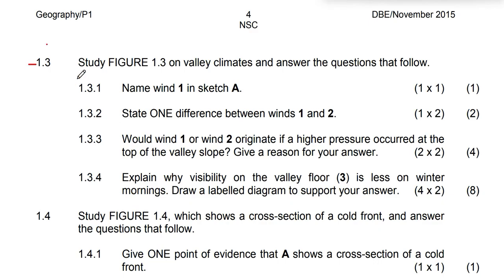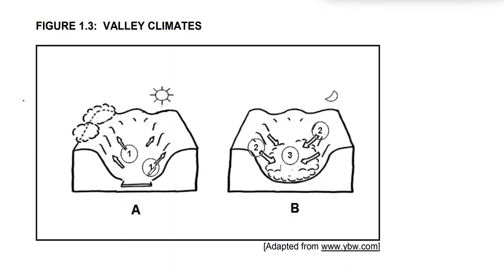Let's come to the very first question, Question 1.3.1: Name Wind 1 in sketch A. So we have to name Wind 1. As I mentioned, we're going to talk about anabatic winds as well as katabatic winds. You can see these are up-slope winds, and they occur during the day.